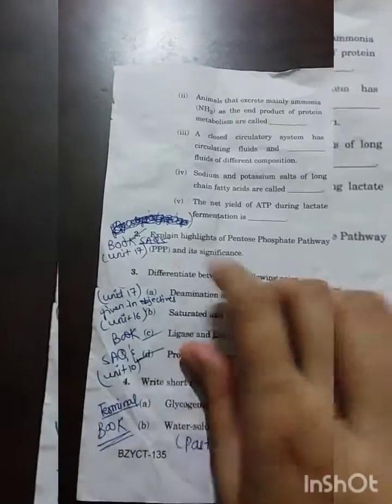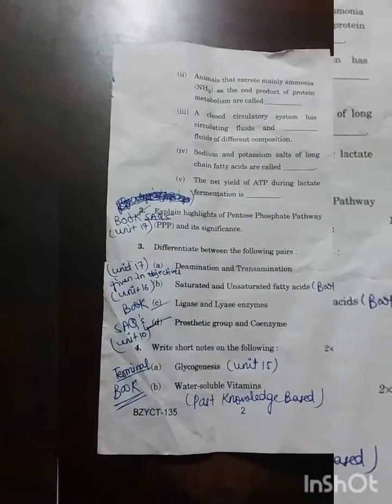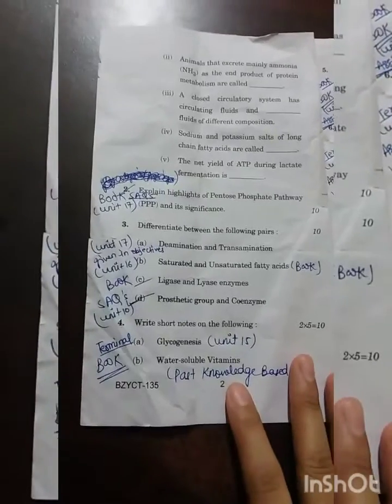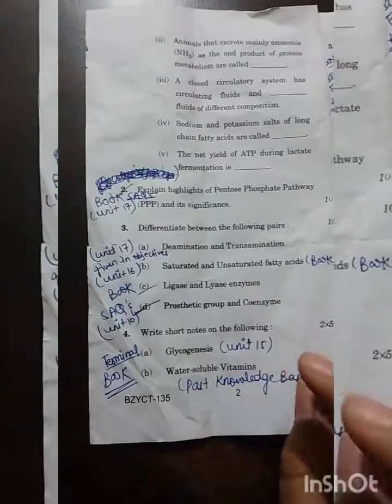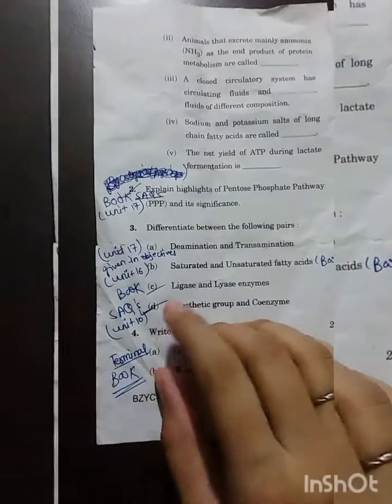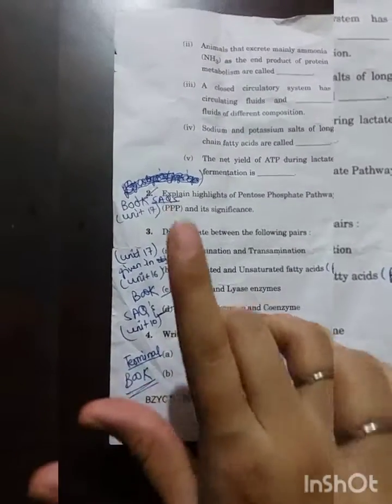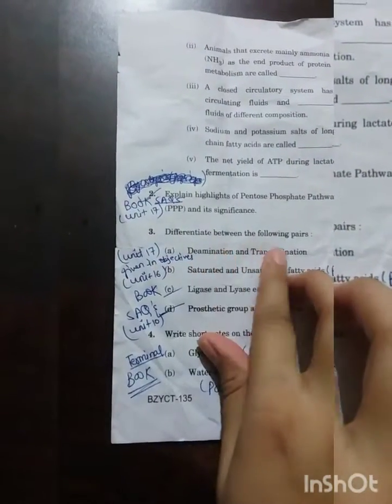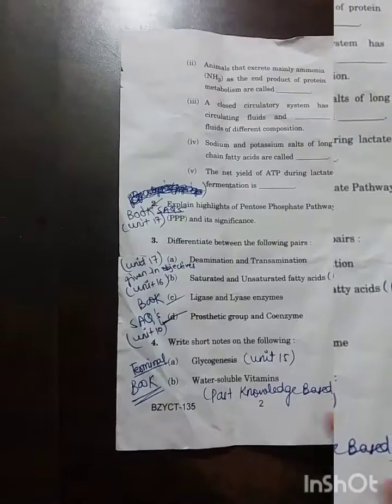The next question was from the SEQs of the book. Now, differentiate between following pairs. One thing I noticed is that when a chapter starts, like Unit 1, the objectives of the chapter are given first — what the outcomes are and what will be learned. There were two questions directly from those objectives. One was the difference between de-amination and trans-amination, and the other will come next.